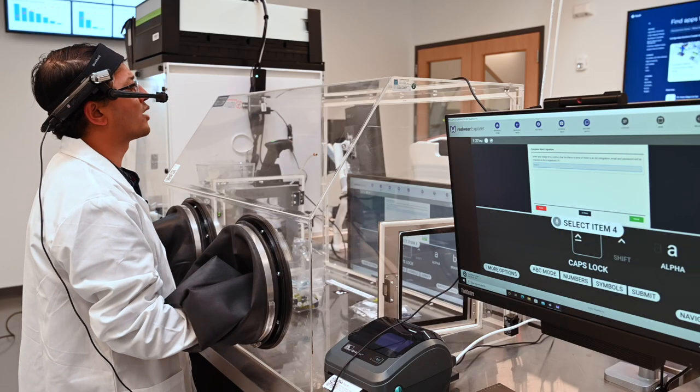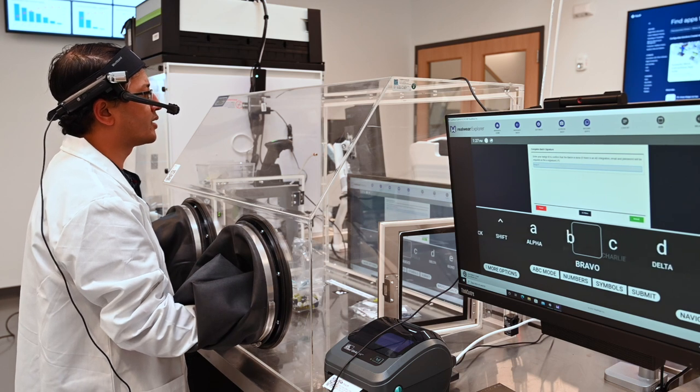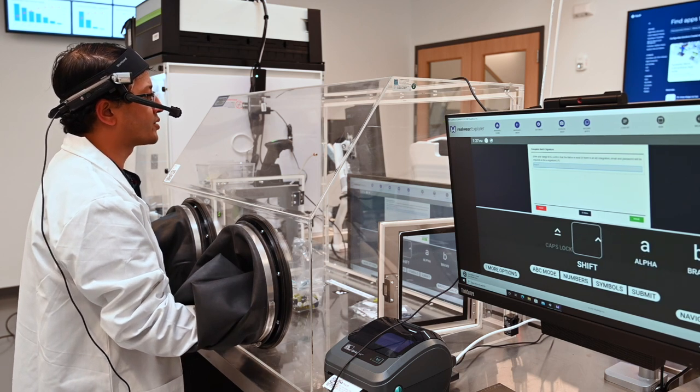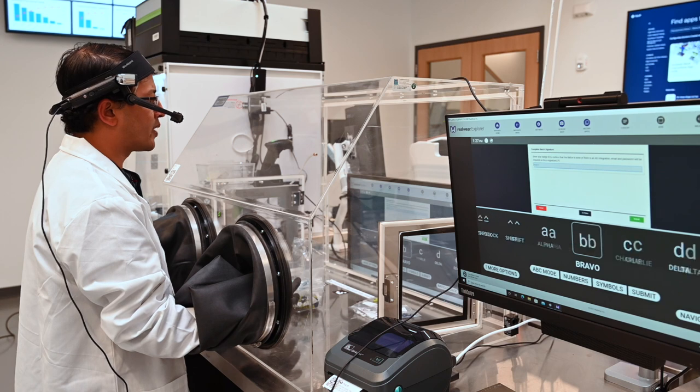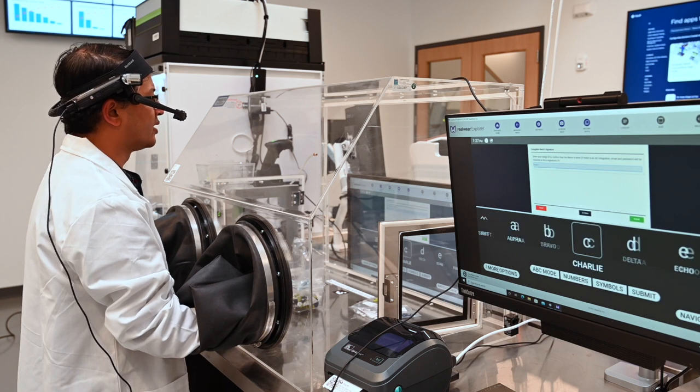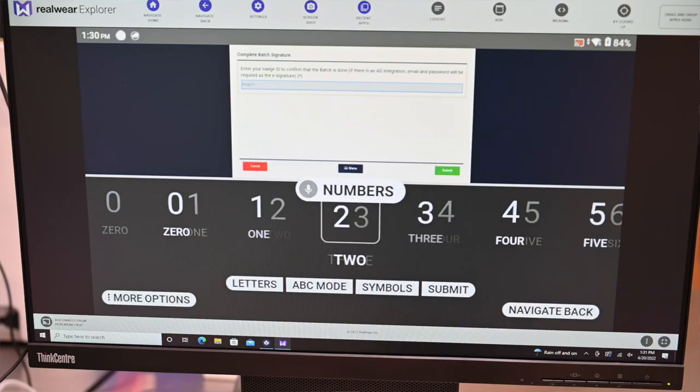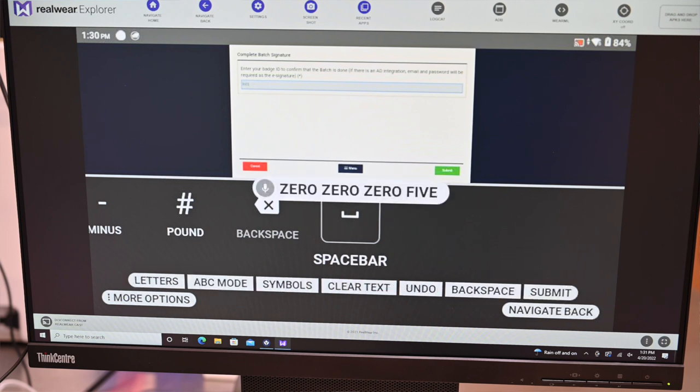With the Tulip platform, there's traceability and genealogy associated with it. We're also capturing e-signatures. I'm going to put in my badge ID for my signature: 0005. Submit.